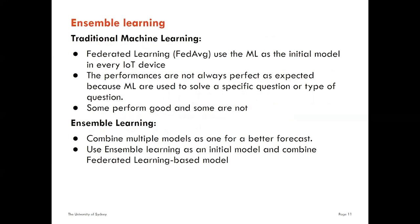Why are we using ensemble learning? The original Federated Average model uses machine learning as the initial model in every IoT device. However, performances are not always perfect because machine learning models are designed to serve a specific type of question — some perform well and some do not. For instance, logistic regression effectively classifies data into distinct classes by investigating connections between labeled data. However, if the number of features is greater than the number of observations, logistic regression should not be used. Therefore, we use ensemble learning because it combines multiple models as one for a better forecast, combining ensemble learning as the local model with a Federated Learning-based model.